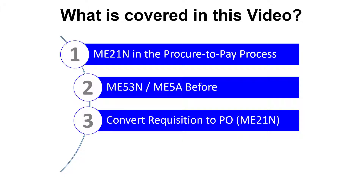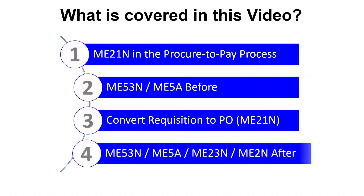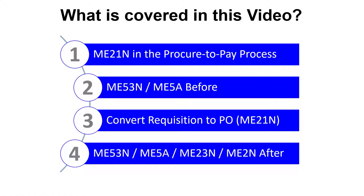We'll then convert a purchase requisition into a purchase order in SAP using transaction ME21N. And finally, once the purchase requisition is converted into a purchase order, we'll again review the status using transaction ME53N, Display Purchase Requisition, and transaction ME5A, Purchase Requisition List Display. We'll then look at the purchase order using transaction ME23N, Display Purchase Order, and transaction ME2N, Purchase Orders by PO Number.